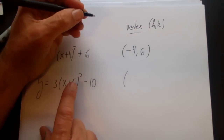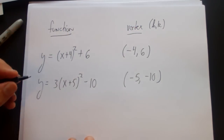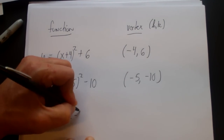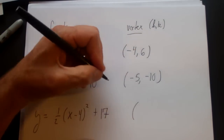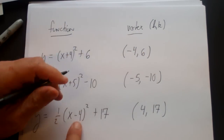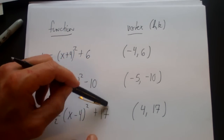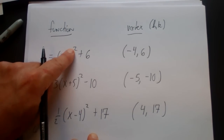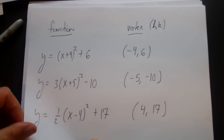For y equals three times x plus five squared minus ten, the vertex will be negative five and negative ten. One more example: y equals one half times x minus four squared plus seventeen. The vertex in that case will be positive four and positive seventeen. Why positive four? Because h changes sign, going from minus four to positive four. K doesn't change sign. This moves it left and right four and up and down seventeen.